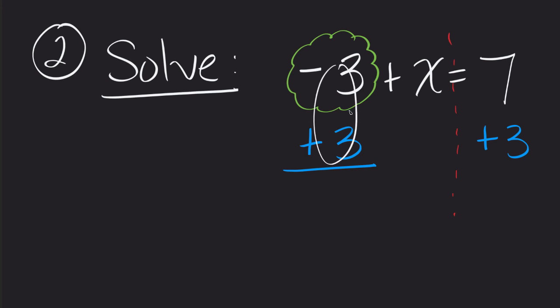Well, negative 3 plus 3 is 0. That drops down our X. There's our barrier, our equal sign. And 7 plus 3 gives me 10. We now know what our solution is to this problem.